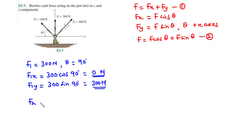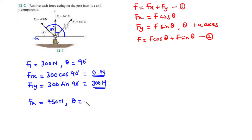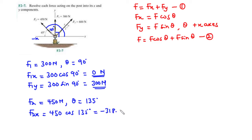Now for F2, the magnitude is 450 N. The angle between the negative x-axis and F2 is 45 degrees. Since this angle is 45 degrees, the angle formed between F2 and the positive x-axis is 90 + 45 = 135 degrees. Therefore, theta equals 135 degrees. For F2x: 450·cos(135°) = −318.20 N.